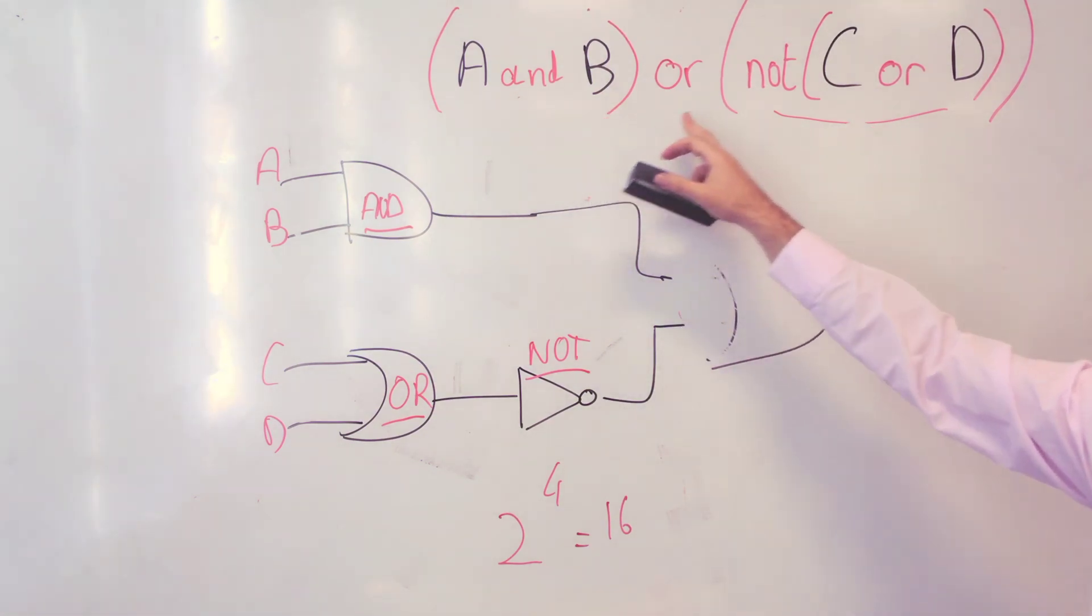A and B OR NOT C OR D. And that would give you the same result than the truth table we had before.